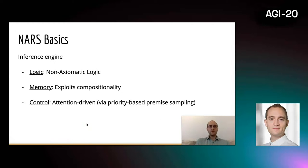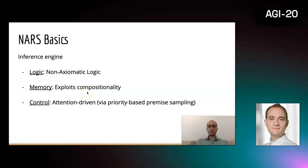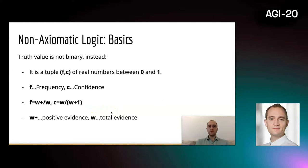NARS is an inference engine consisting of three major components: a non-axiomatic logic, a memory structure which exploits compositionality, and a control strategy which works attention-driven by a form of priority-based sampling. The modular representations it uses we call concepts.